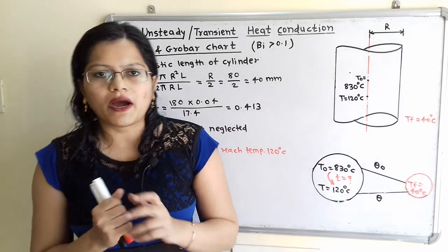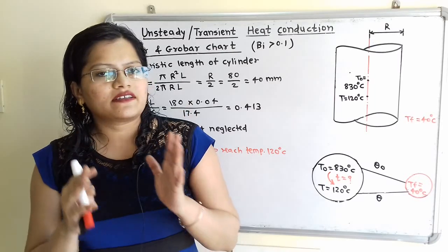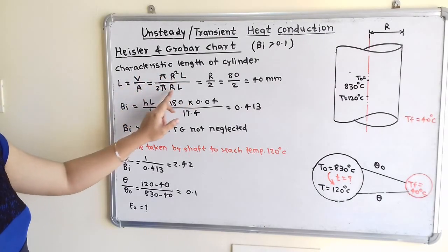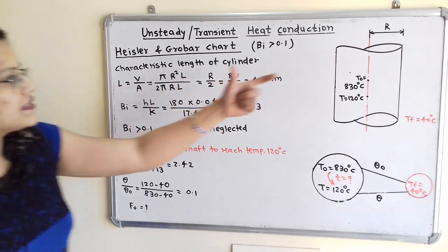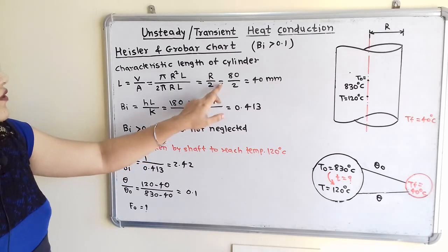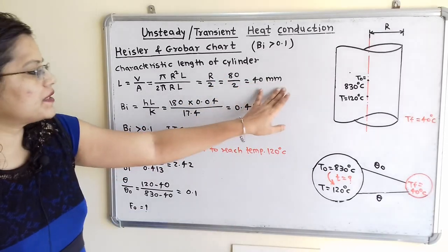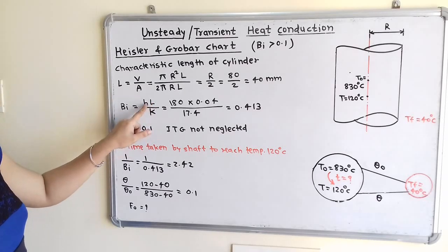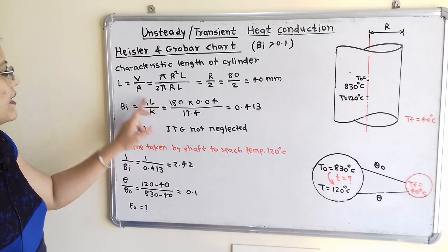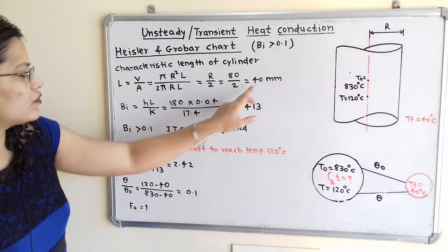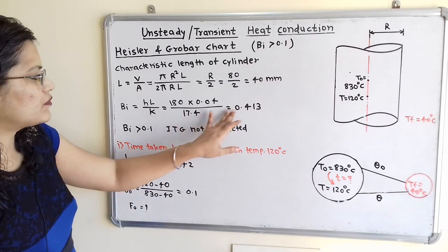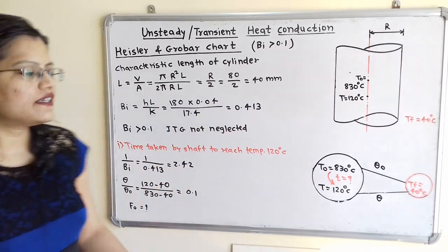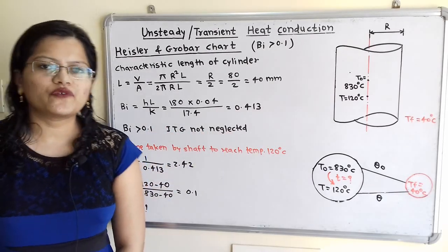First, we find the Biot number. The characteristic length for a cylinder is Volume/Area = πR²L / 2πRL = R/2 = 40 mm = 0.04 m. The Biot number Bi = H·L/K = 180 × 0.04 / 17.4 = 0.413. Since Bi > 0.1, the internal temperature gradient cannot be neglected, and we must use the graphical method — the Heisler and Grover chart.